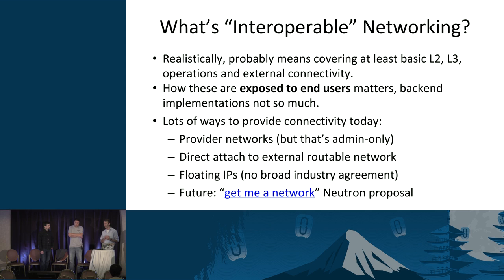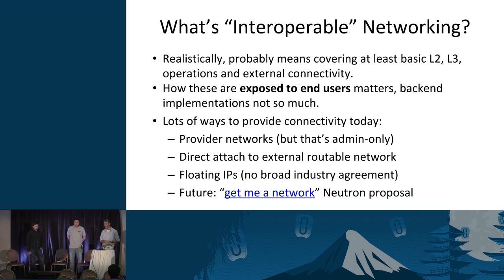We care how these are exposed to end users; we don't really care how they're implemented on the back end. We don't care if you're building networks with VXLAN or VLANs — that's an implementation detail that should be completely hidden from the user. We basically care that the API call works and returns a thing that users can use. The problem is that there are lots of different ways to provide connectivity in OpenStack today: provider networks (admin-only), directly attaching instances to externally routable networks, and floating IPs.